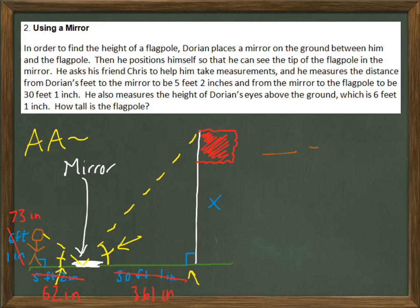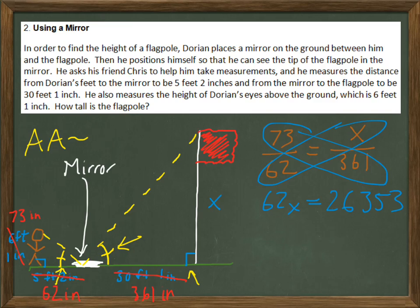Setting up my proportion. I could put 73 over 62. Then on the other triangle, I would have x over 361. To solve it, I could cross multiply. So I would get 62x equals from 73 times 361, that is 26,353. Divide both sides by 62, and I get x to be 425.05 inches. Well, that doesn't tell me a whole bunch. I'd rather know the height of the flagpole in feet, really. So if I divide that by 12, that would give me a height of 35.42 feet. There we go.